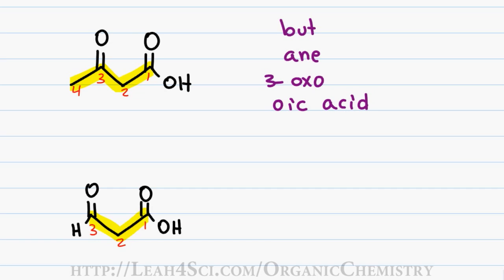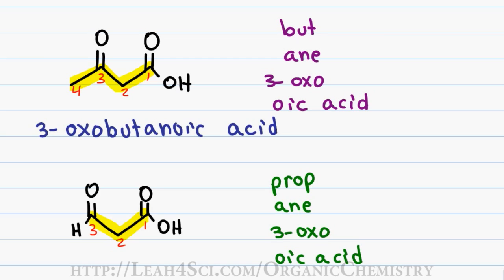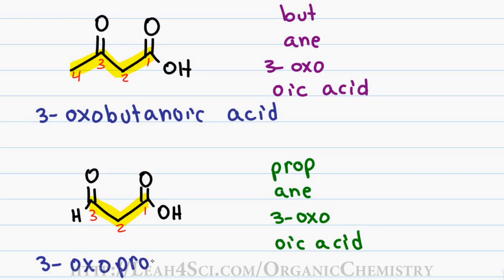For my second example, three carbons gives me a first name of prop, only single bonds gives me a last name of ane, and aldehyde on carbon 3 gets demoted from the al functional group to the oxo substituent for a prefix of 3-oxo and, of course, the ending oic acid. And so I get an interesting phenomenon. The first molecule has a final name of 3-oxobutanoic acid, and my second molecule gets a final name of 3-oxopropanoic acid.